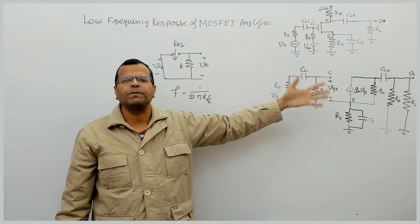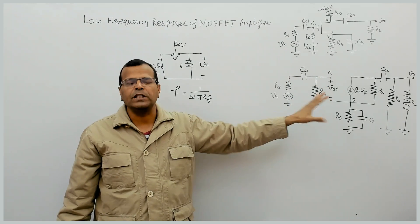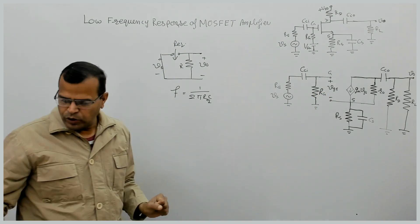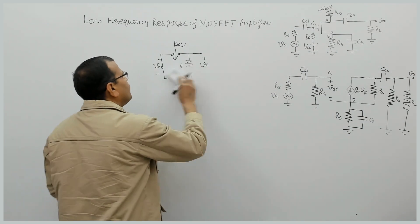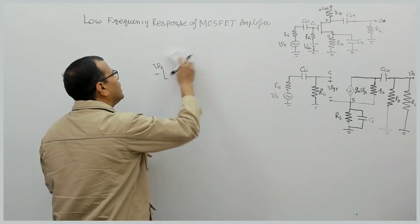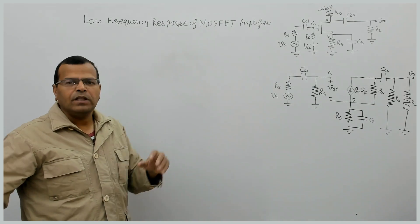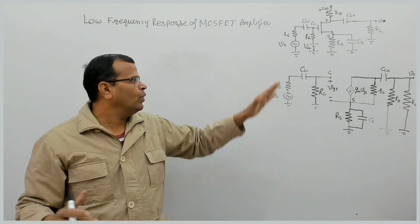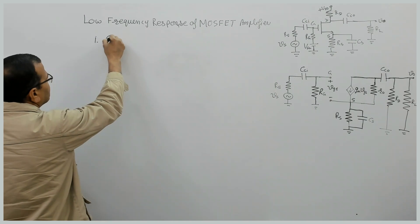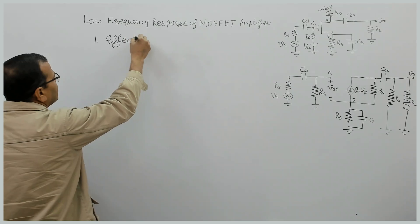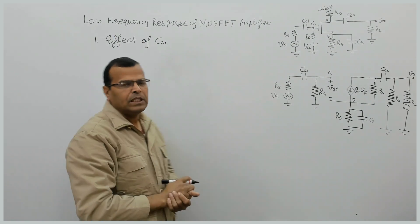I have already explained this procedure in my previous video on low frequency response of BJT amplifiers. The procedure here remains similar. We will discuss the effect of all the capacitors one by one — that is, the cutoff frequency due to each individual capacitor. First, we will find the cutoff frequency due to the input coupling capacitor CCI.